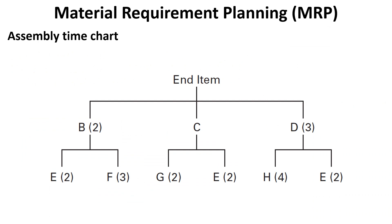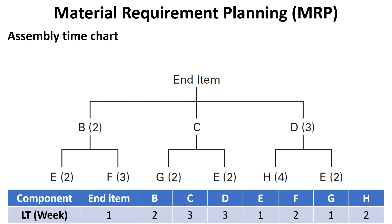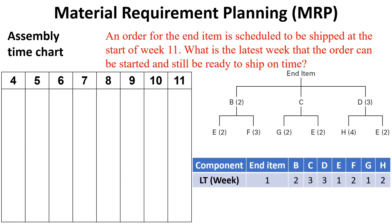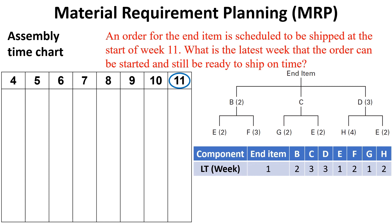The number of required items of the end product with the shown product structure tree was found in the previous video. The lead time of items and subassemblies is illustrated in this table. An order for the end item is scheduled to be shipped at the start of week 11. What is the latest week that the order can be started and still be ready to ship on time? Because the end item is scheduled to be shipped at the start of week 11, locate this week at the far right. The lead time for the finished product is one week, so going back from the beginning of week 11 by one week means that assembly of the end item must start at the beginning of week 10.